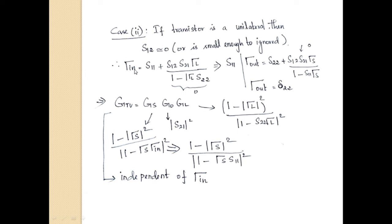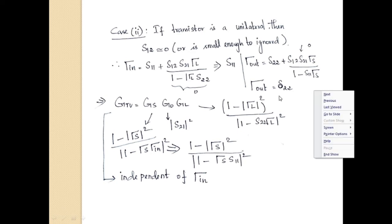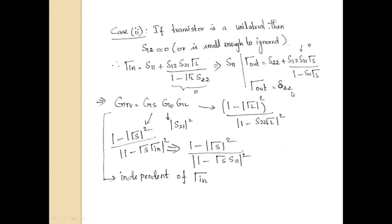With the unilateral condition (S12 = 0), the reflection coefficient looking towards the input side is γIN = S11 + S12·S21 terms, but substituting S12 = 0, that term is cancelled and we get γIN = S11. Similarly, γOUT = S22 + S12·S21 terms, and substituting S12 = 0, that term also cancels and we get γOUT = S22.